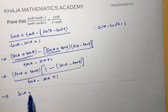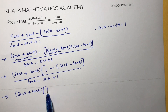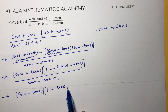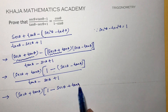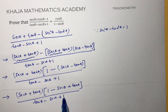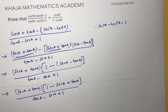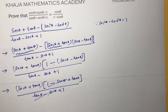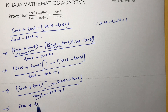Simplifying: sec θ + tan θ into (1 - sec θ + tan θ) over (tan θ - sec θ + 1). Since tan θ - sec θ + 1 equals 1 - sec θ + tan θ, they cancel. What is left is sec θ + tan θ.